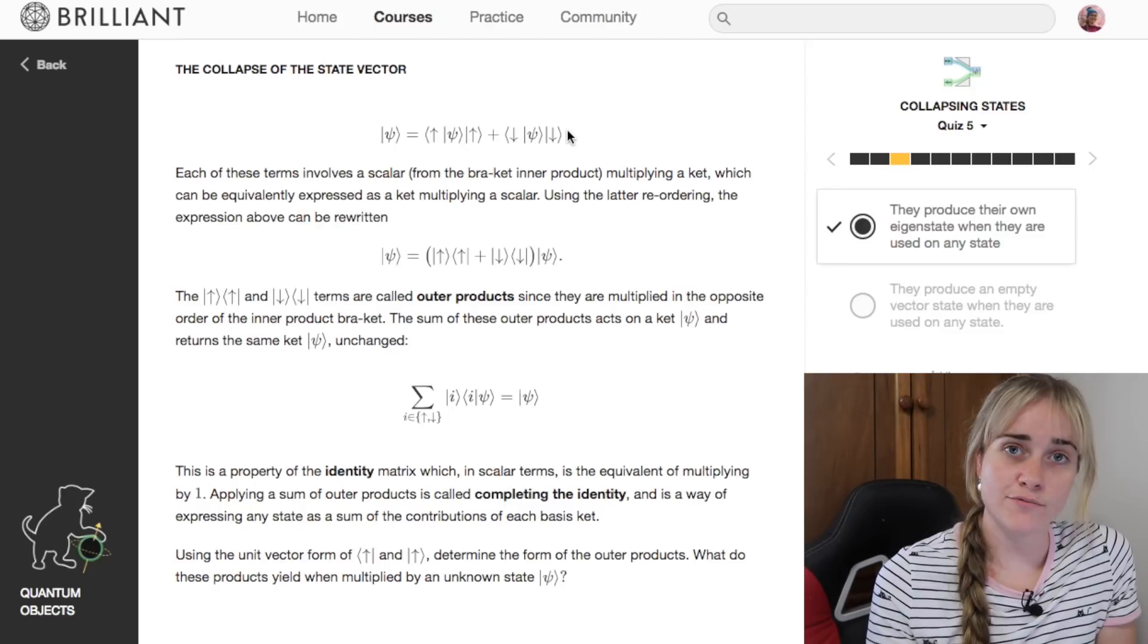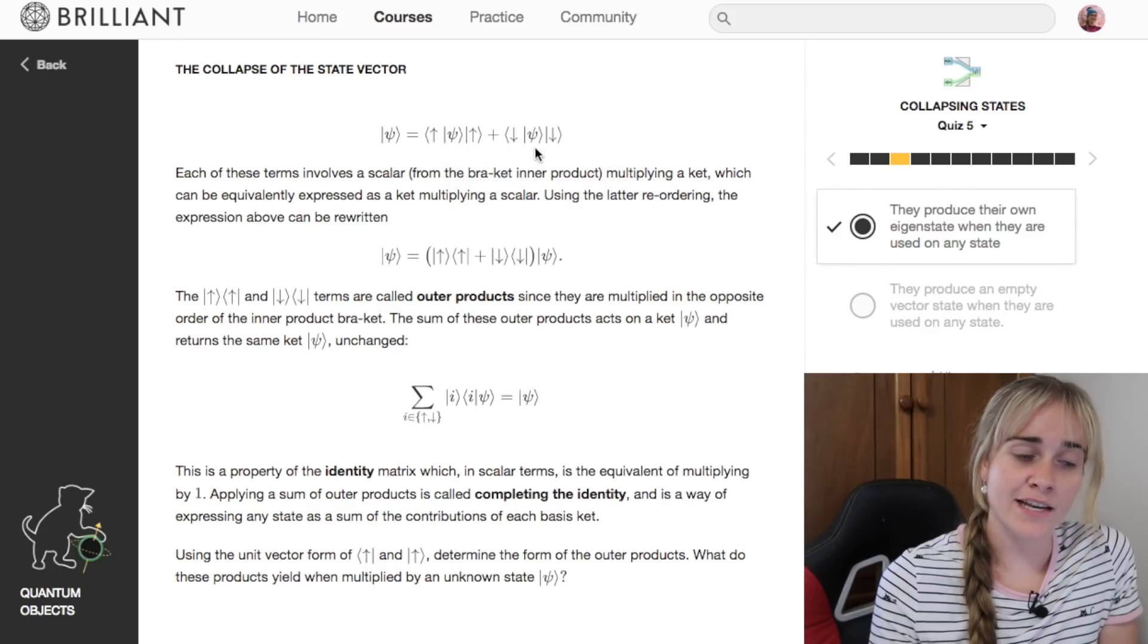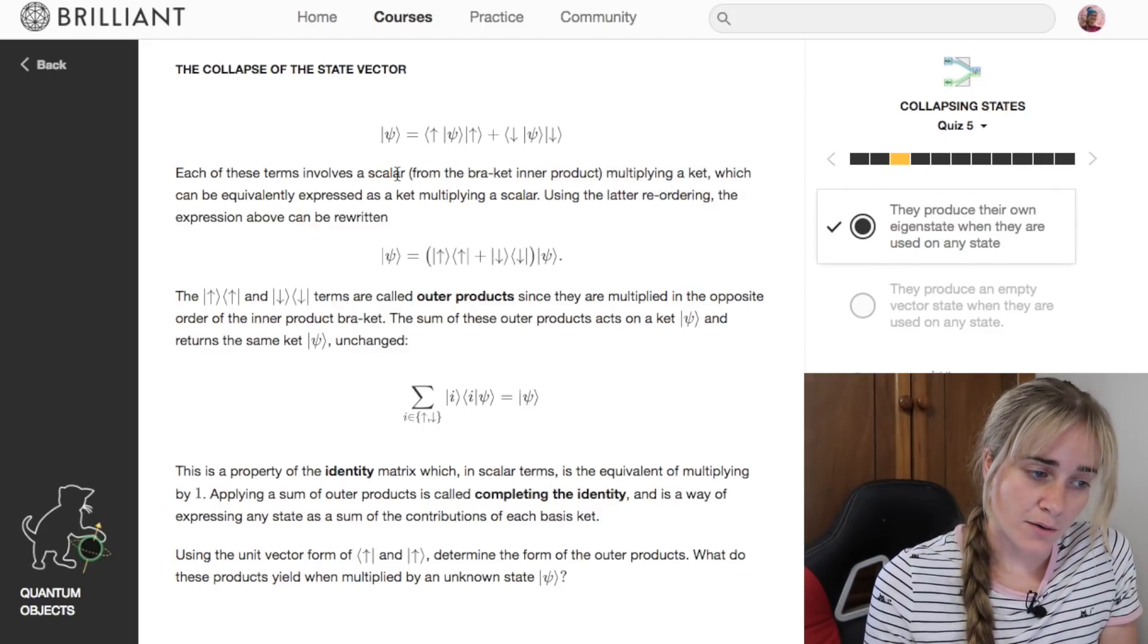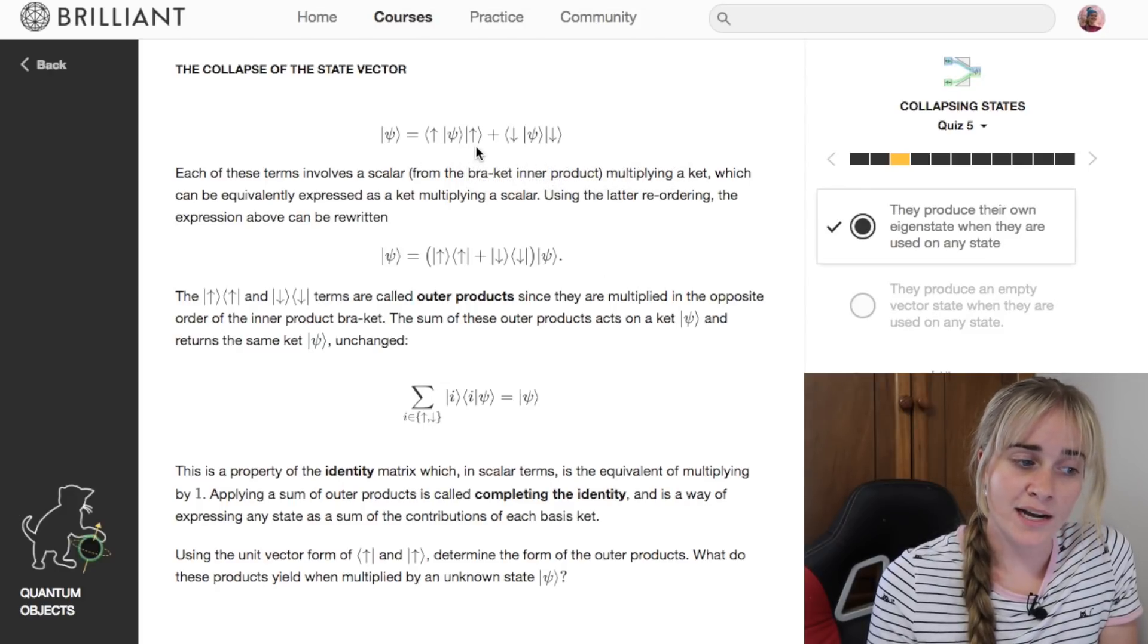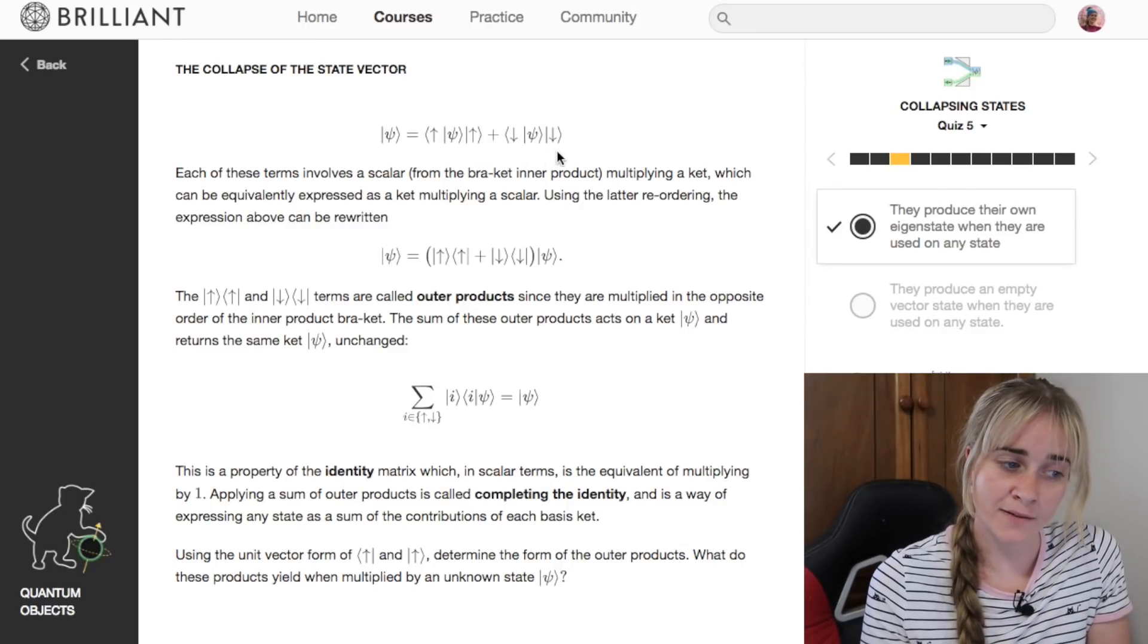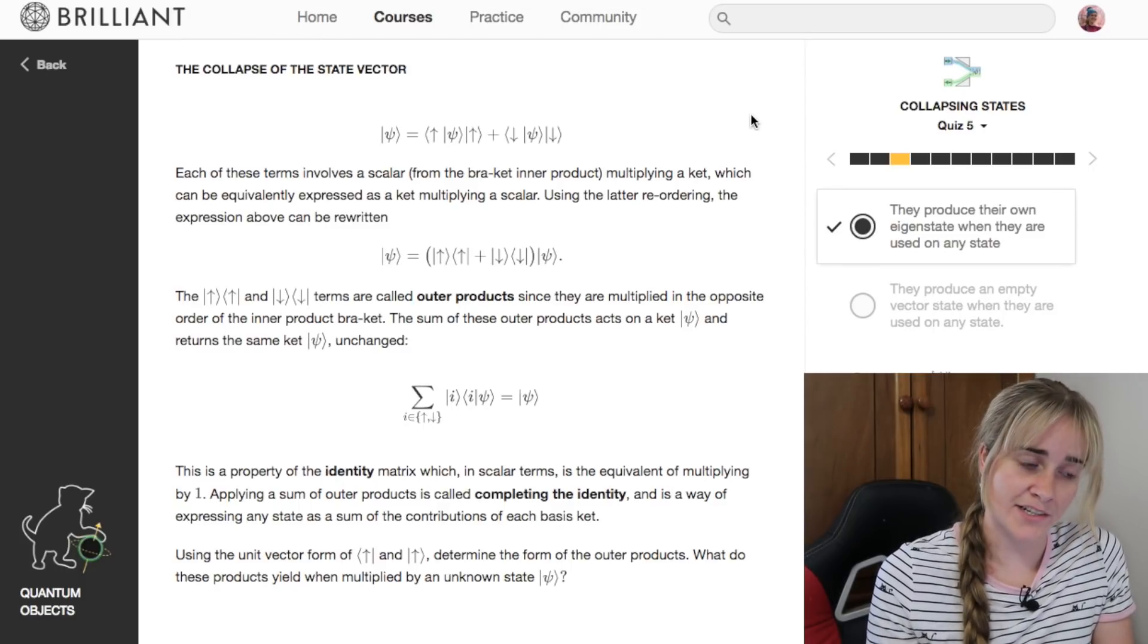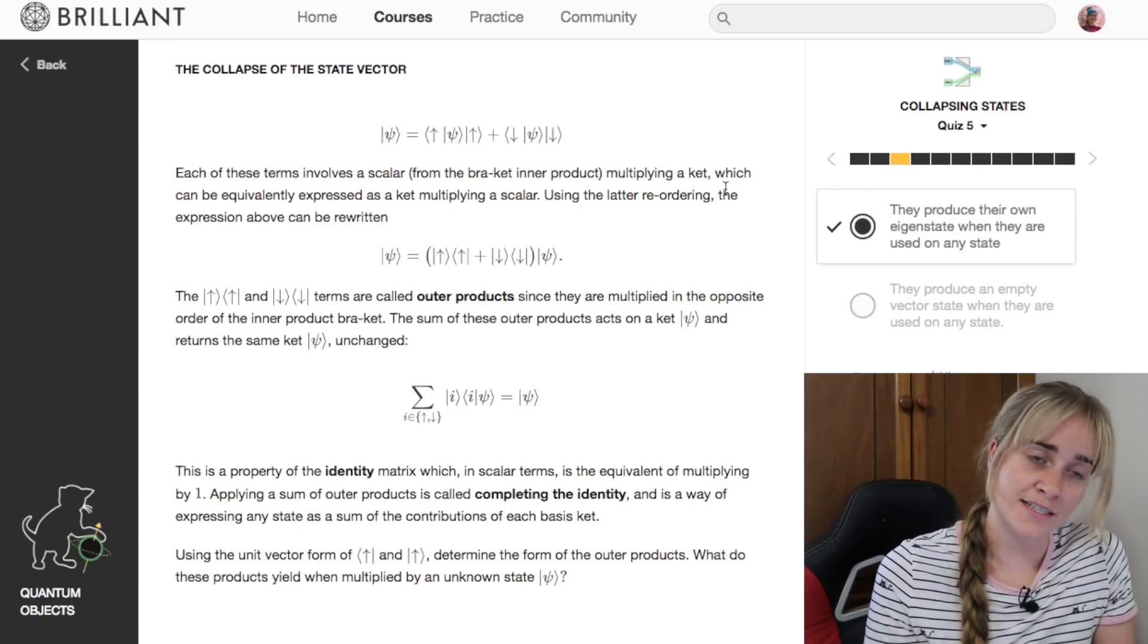This line here is just rewriting what we had on the previous page, but instead of writing a and b, they've replaced them with the inner product notation. This whole line here is scalars times state kets, in this case a times spin up and b times spin down. Now a scalar is like a number, and you can change the order of multiplication when you're dealing with a scalar value.